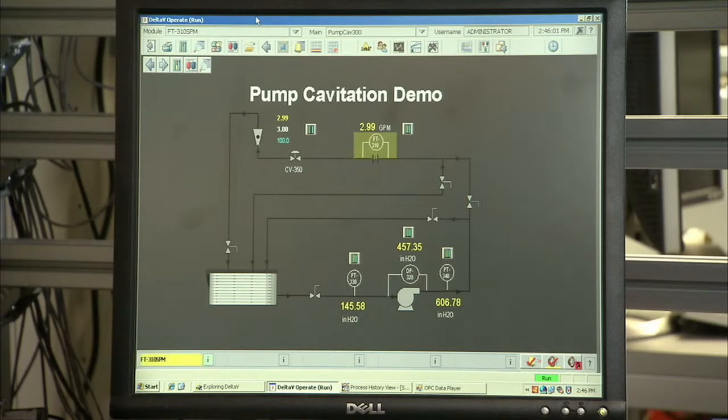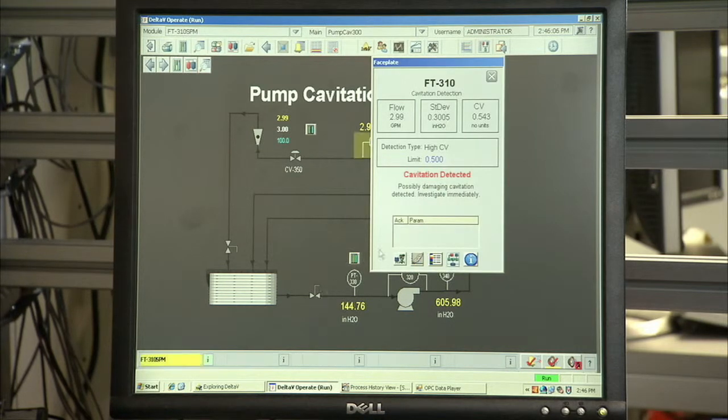As you can see here, the plant web alert is flashing on the alarm banner, notifying the operator of the situation. By clicking on the alarm banner, this will allow you to investigate further and give you full access to the process diagnostic trends.